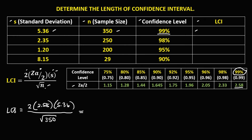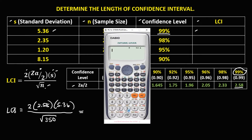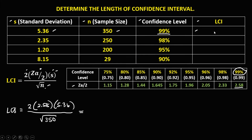To find the length of the confidence interval: we have 2 times 2.58 times 5.36, then divide by the square root of 350. The length of the confidence interval is 1.4784.